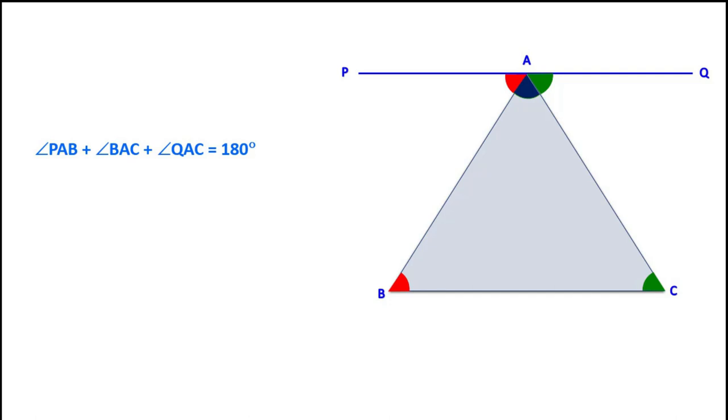Here, angle ABC is equal to angle PAB and angle ACB is equal to angle QAC. As we know, they are alternate angles.